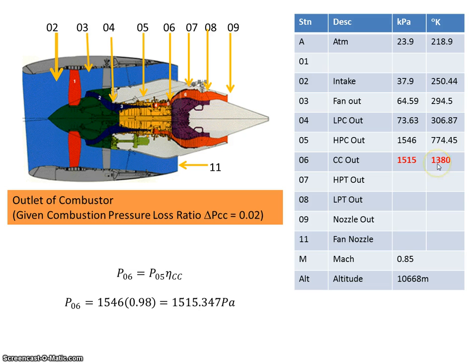The temperature out, well we were told that the maximum turbine inlet temperature, which is also the output of the combustion can, was 1380. So that was a given, so we do not have to calculate that.